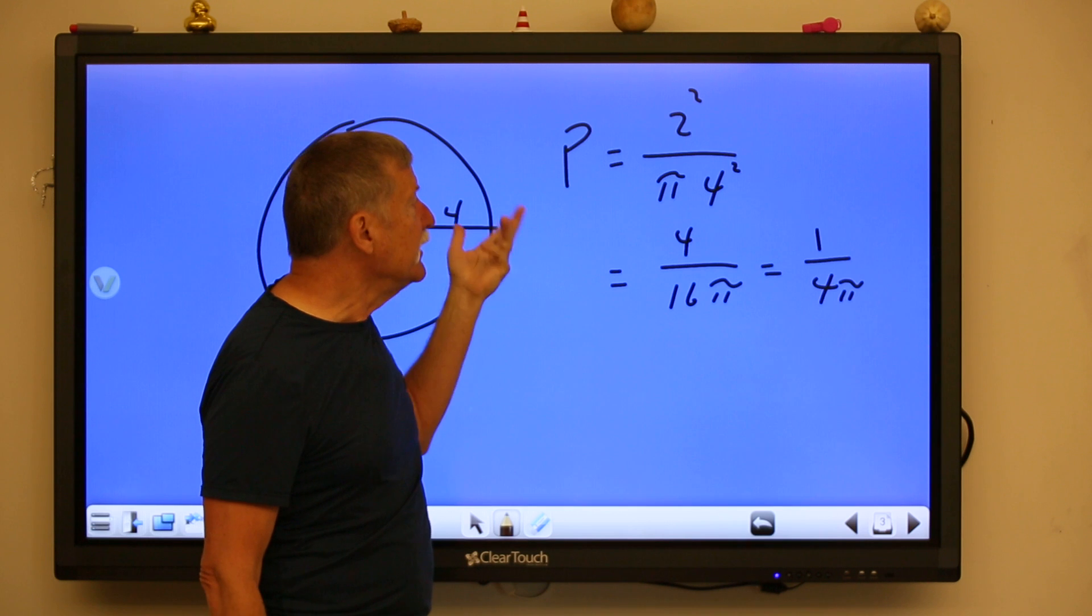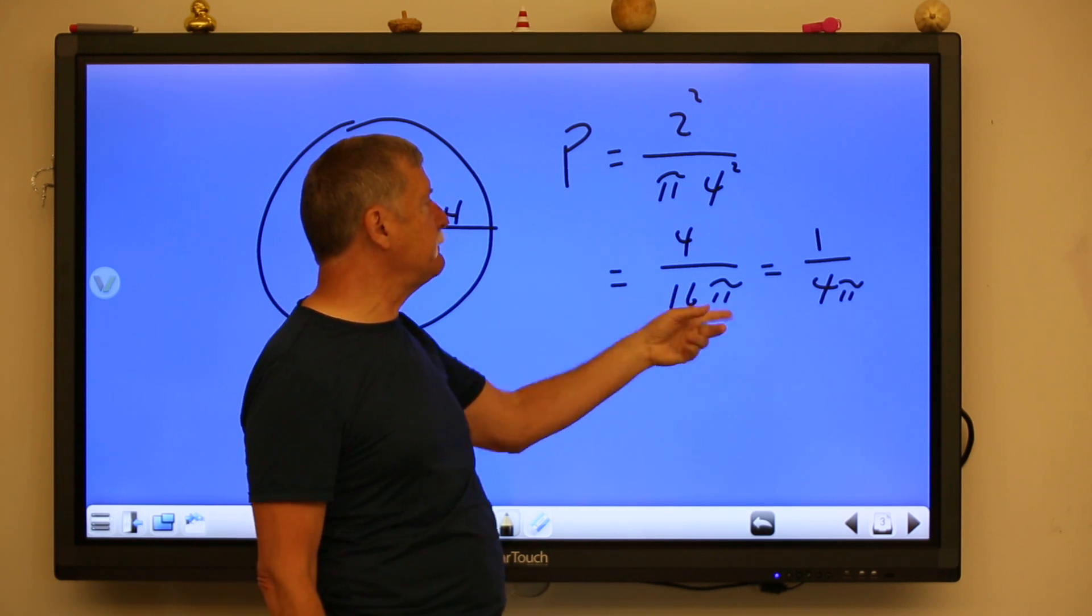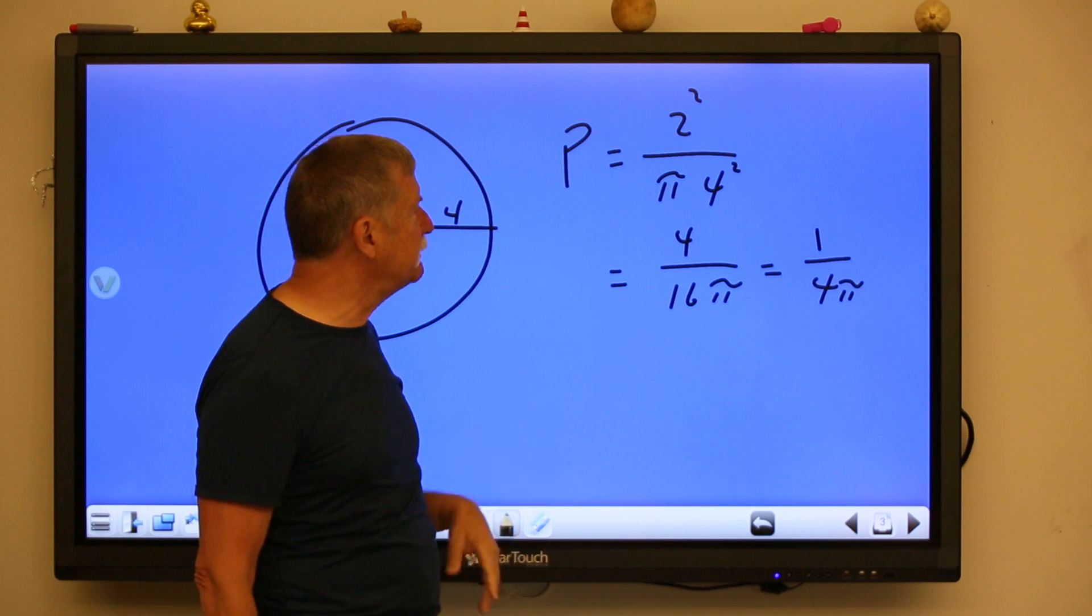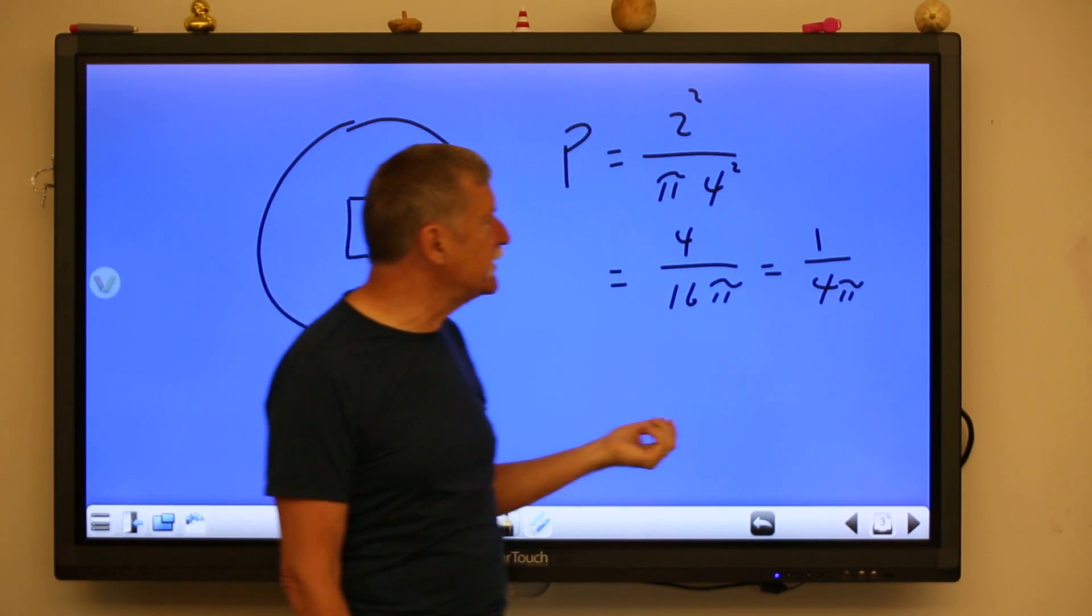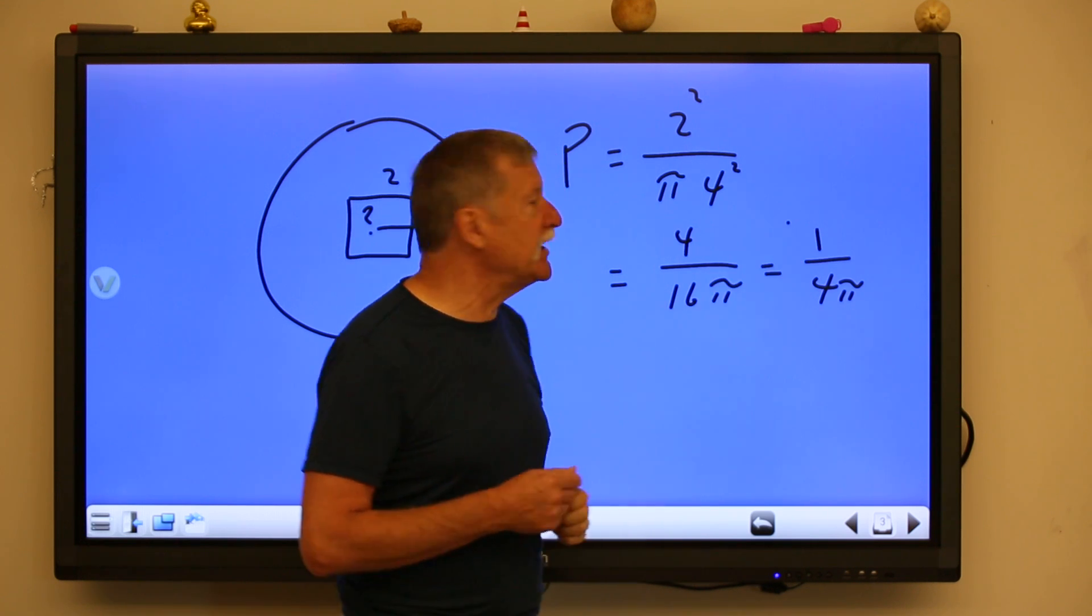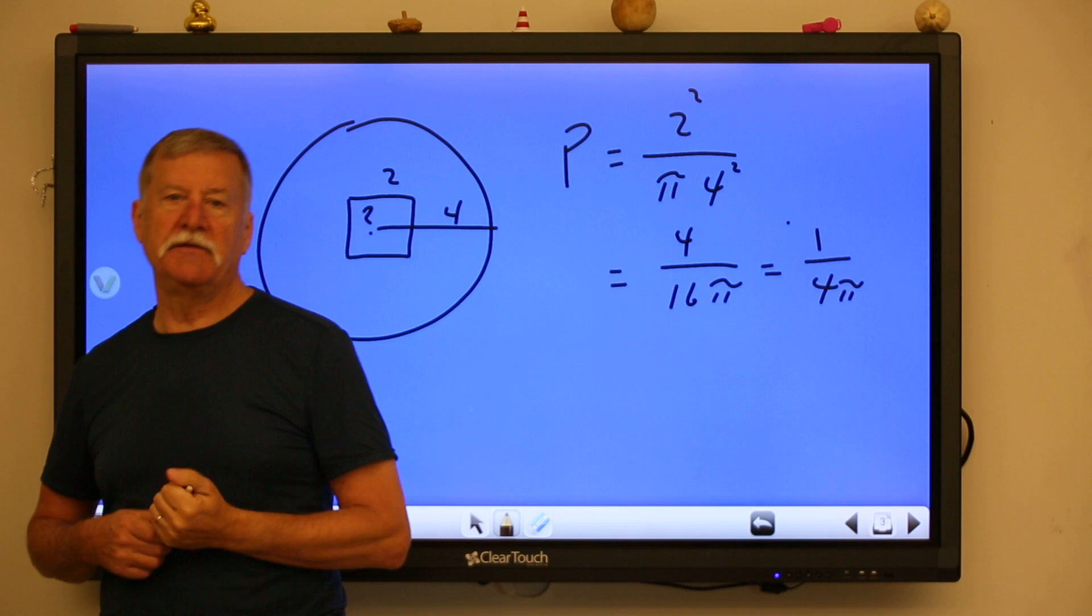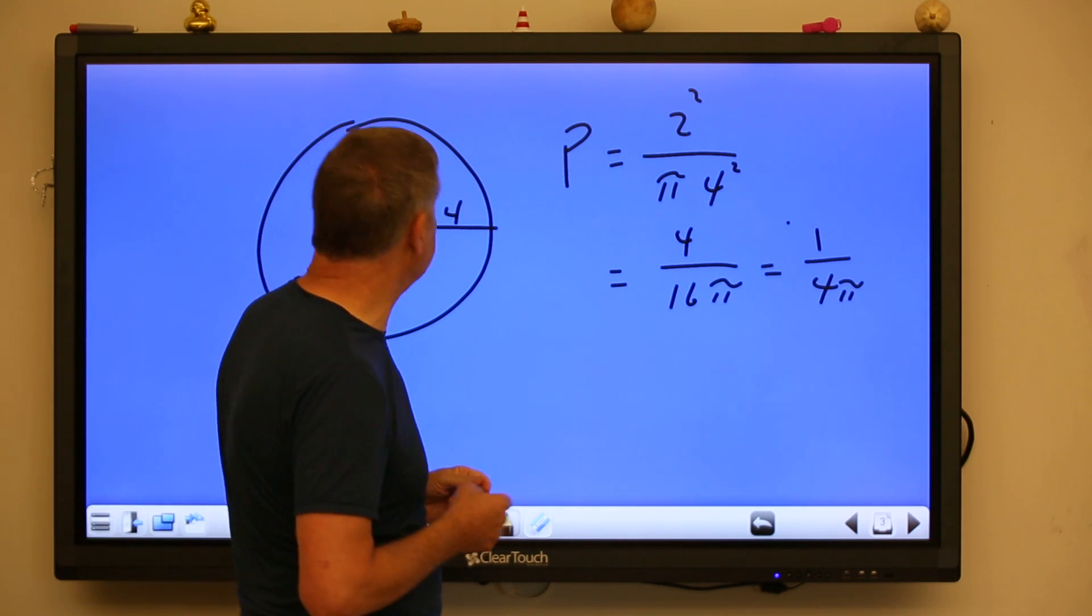Radius is 4. So we simplify that. 2 squared is 4. 4 squared is 16 pi. So we're comparing 4 to 16 pi. We put that in simplest terms. And we'll just leave pi as pi and say that we've got one chance out of 4 pi of hitting that. A little less than 1 out of 12, for example.